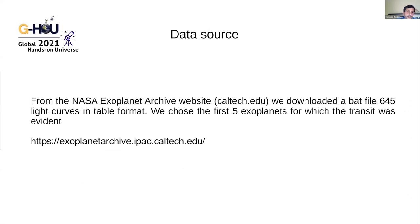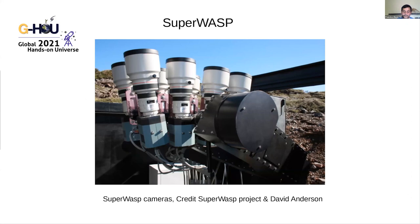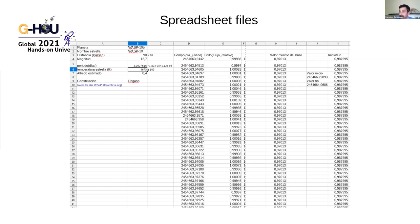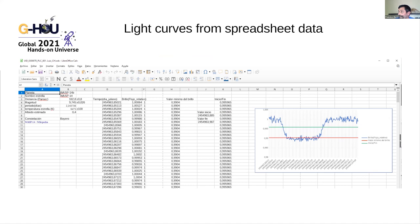To obtain the star data, we go to the NASA Exoplanet Archive and download light curves, then choose five exoplanets to study. Here we can see one of the SuperWASP project cameras used to discover exoplanets. We take the original data files, convert them to spreadsheet format, and the students use the spreadsheet to create the graphs.